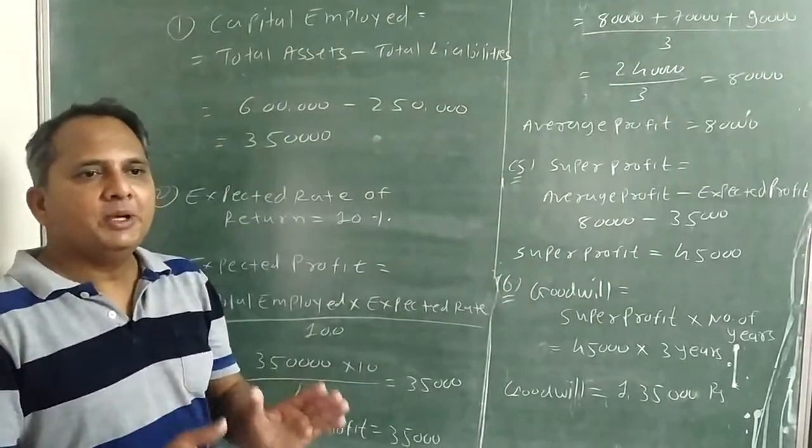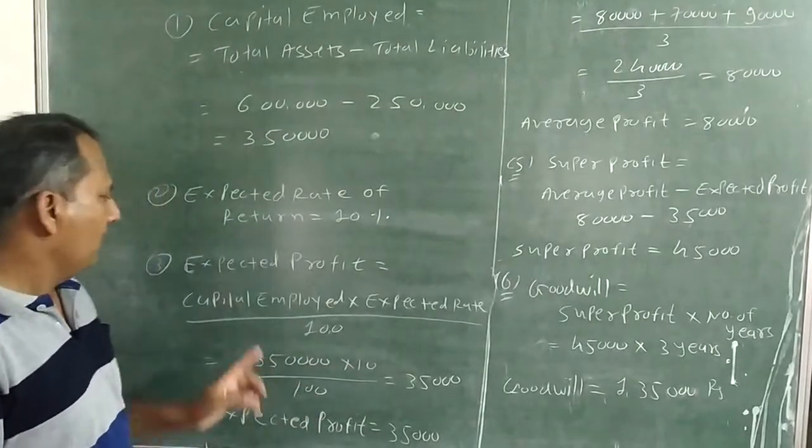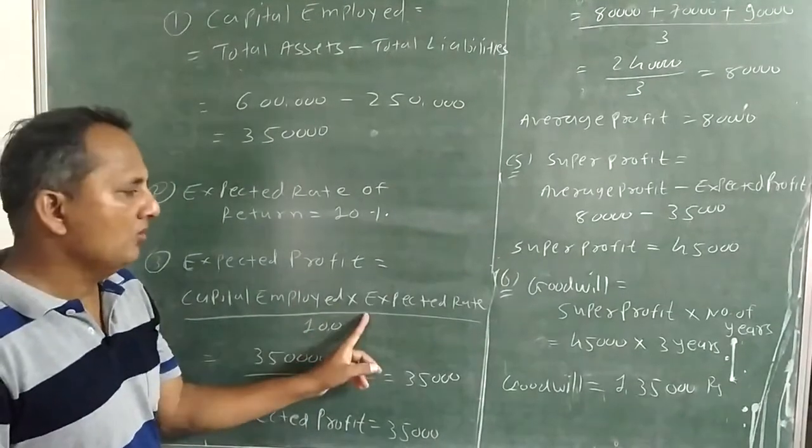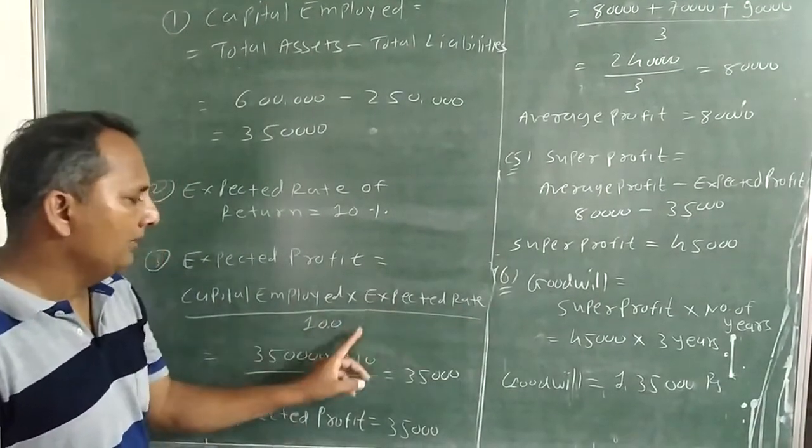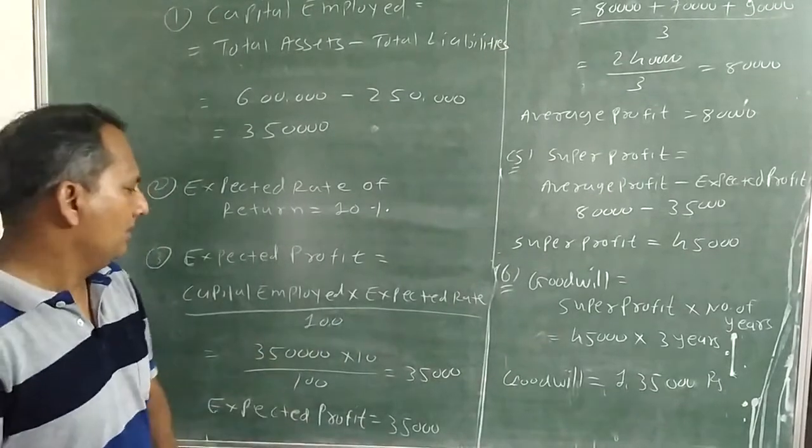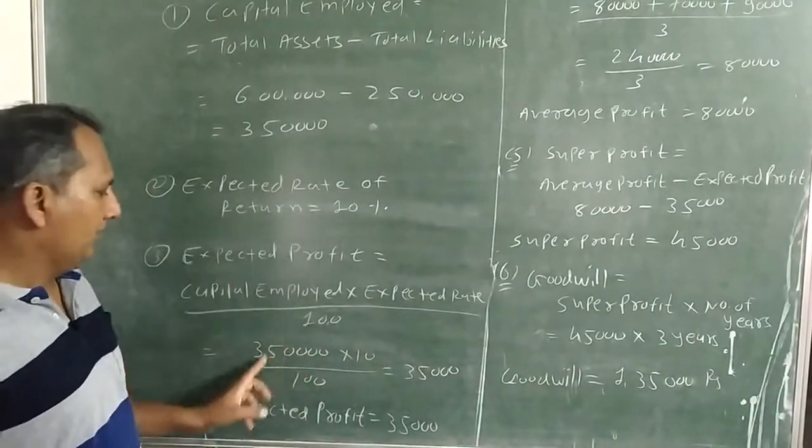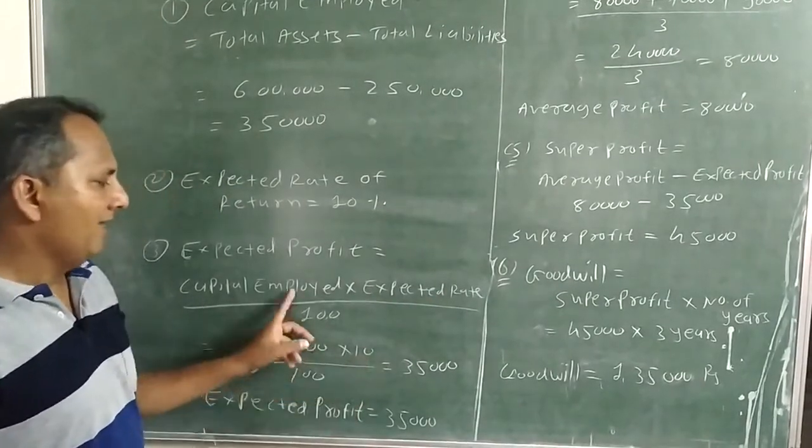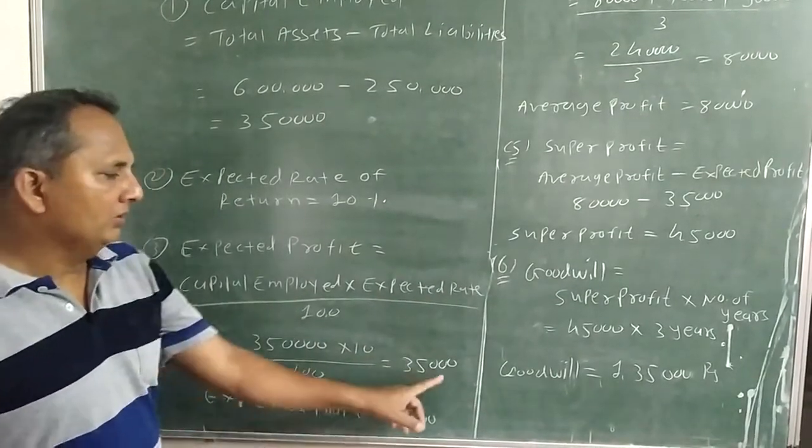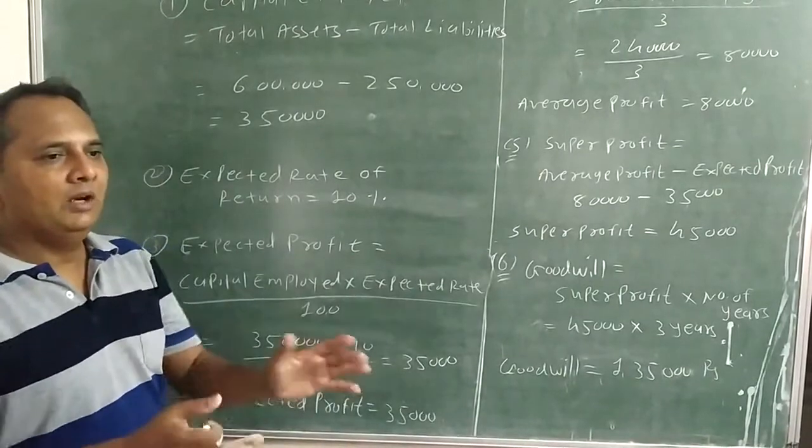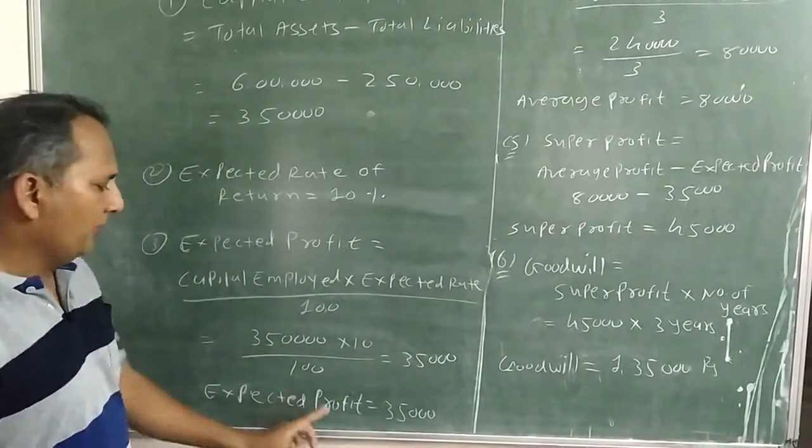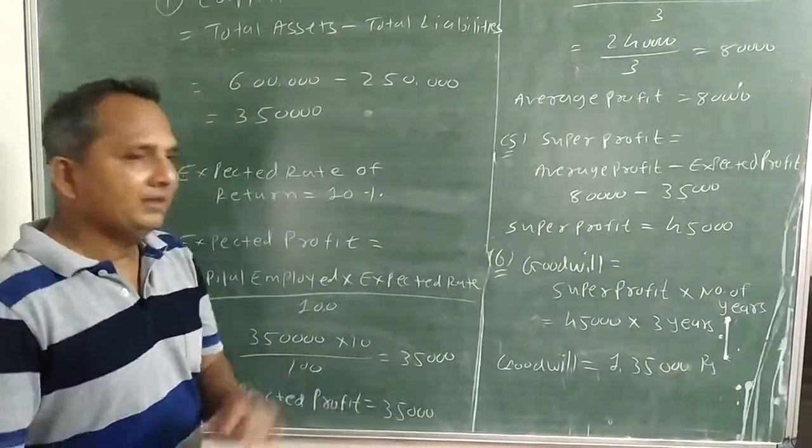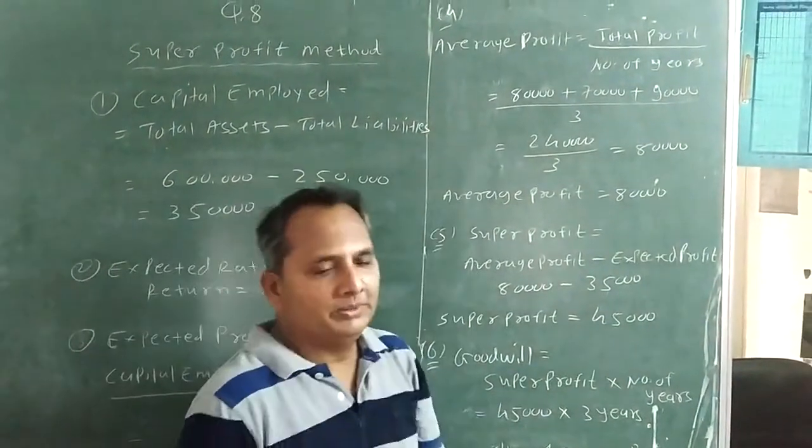Formula of expected profit is equal to capital employed into expected rate upon 100. Here capital employed is 350,000 into expected rate 10 divided by 100 is equal to 35,000. Now you can get expected profit is equal to 35,000.